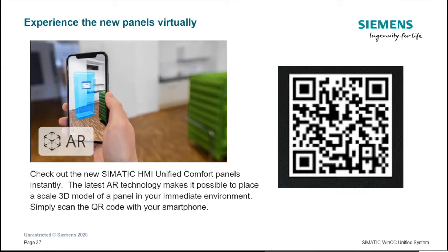Earlier in the presentation, augmented reality technology was mentioned. Siemens has developed an AR experience in which you can place a scale 3D model of a panel in your immediate environment. All you need to do is scan the QR code shown using your smartphone, and a blue panel will display right in front of you with a unified comfort panel on it. The PDF copy of this presentation will allow you to check this out afterwards.